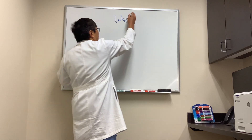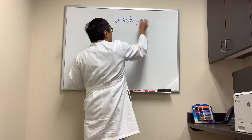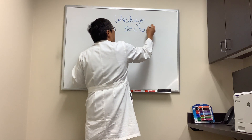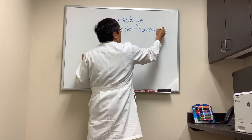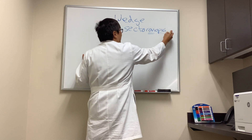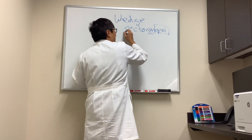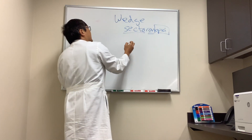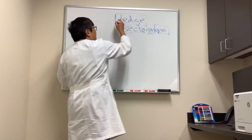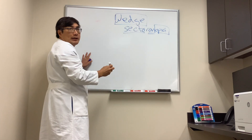Someone wanted to know what a wedge sectoranopia is. 'An' means not, 'opia' means see, 'sector' means sector, and 'wedge' means it looks like a wedge.